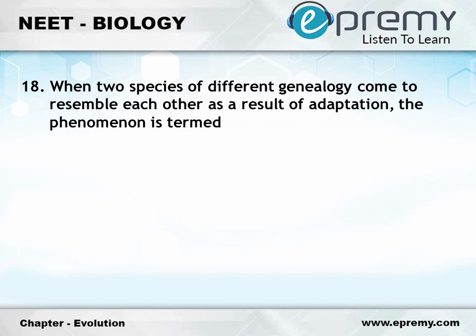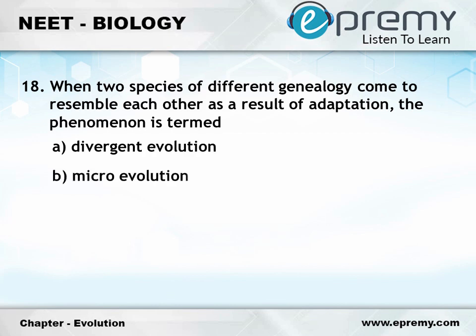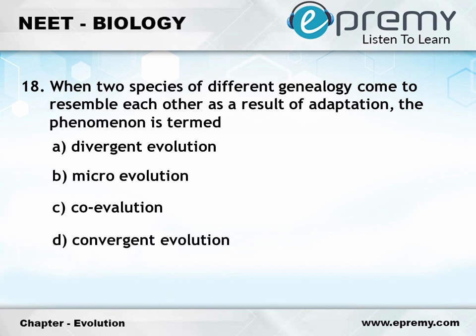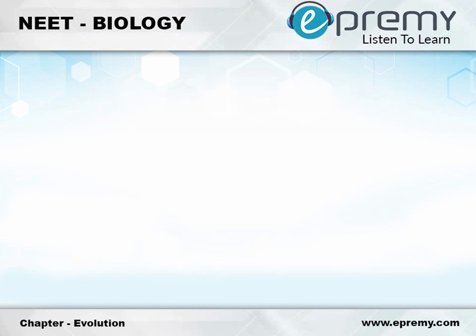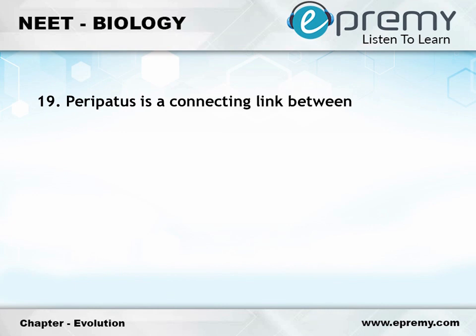Question number 18: When two species of different genealogy come to resemble each other as a result of adaptation, the phenomenon is termed. Option A: Divergent evolution. Option B: Micro-evolution. Option C: Co-evolution. Option D: Convergent evolution. And the answer is Option D: Convergent evolution.